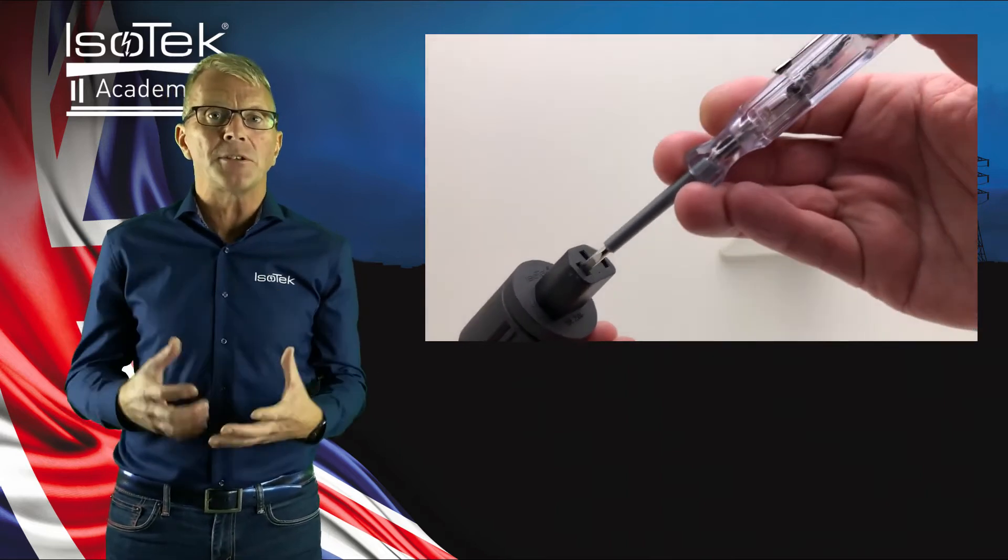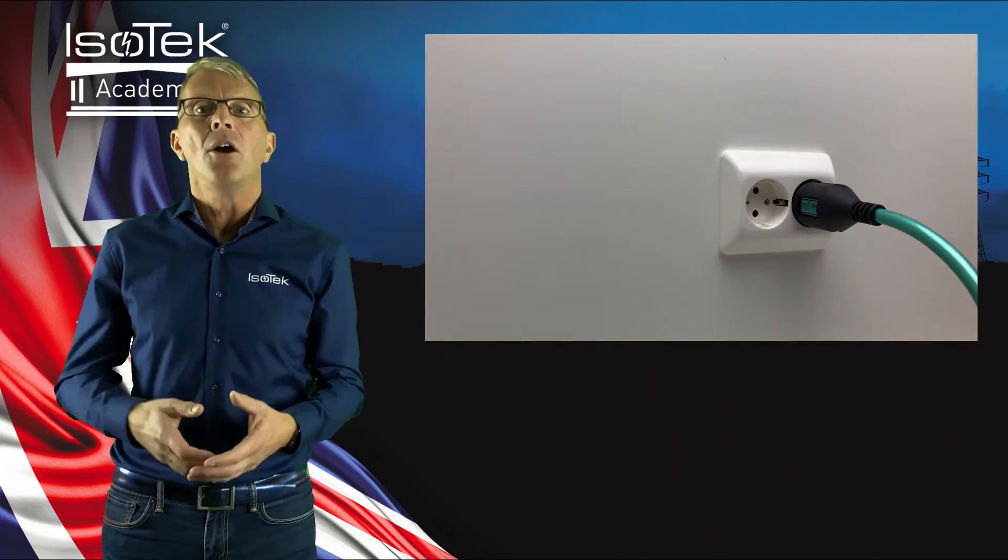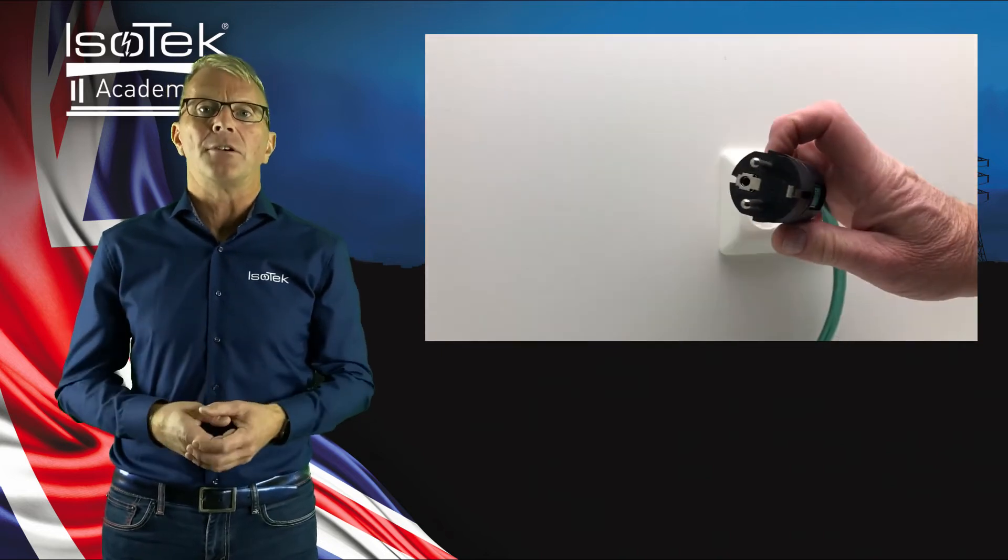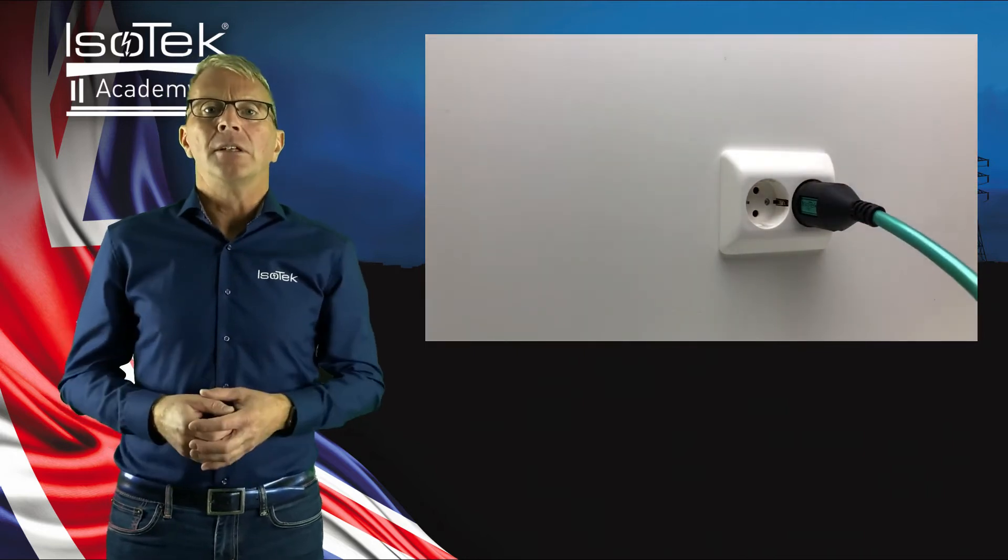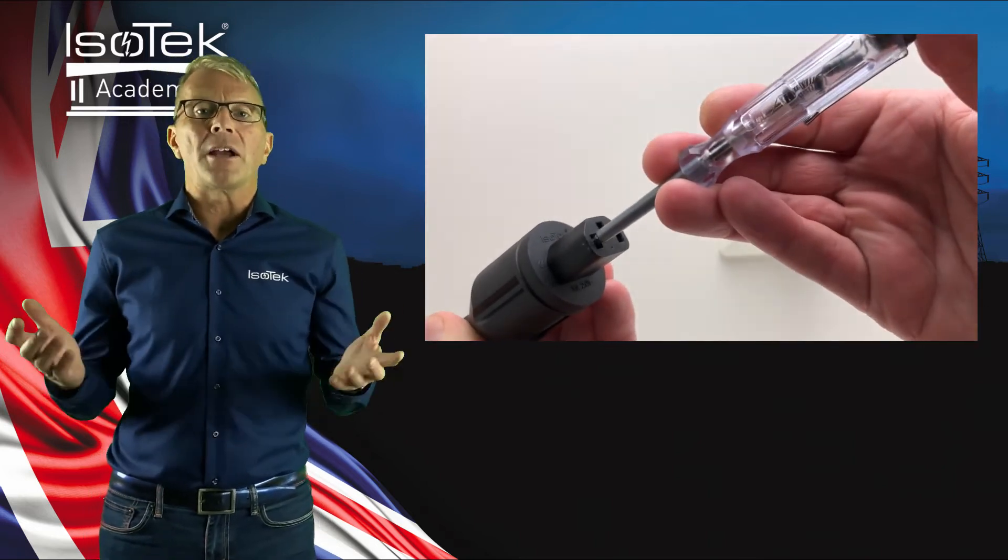By simply inserting an electrician screwdriver into the right or left entry point of a C13 or C15 IEC connector, one can assess the phase—which side is live, which side is neutral. An electric screwdriver can be bought for around two to three euros in your local electric or DIY shop.